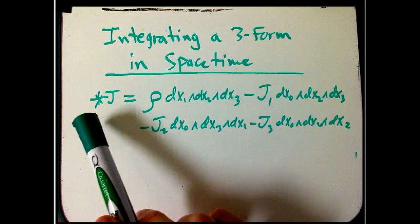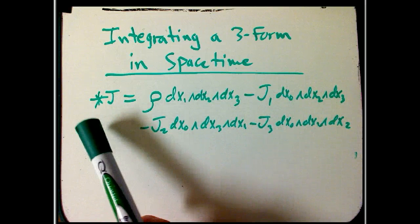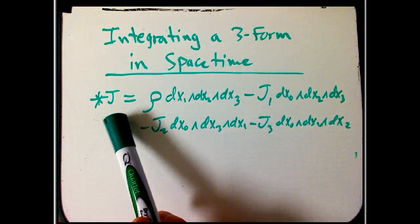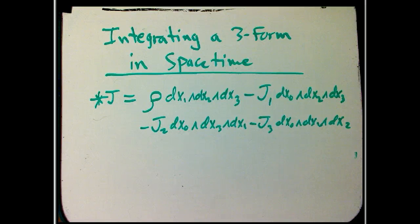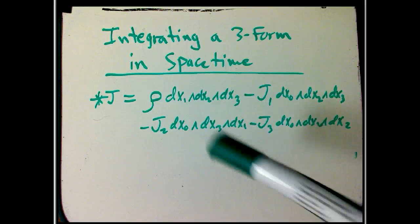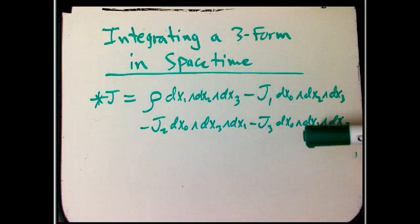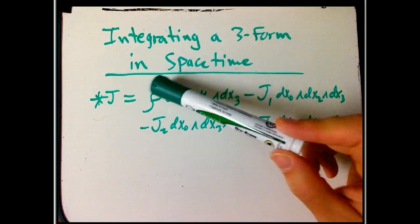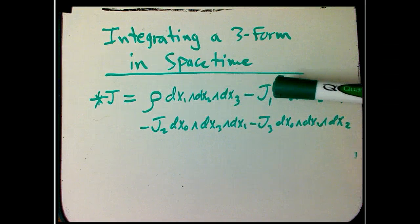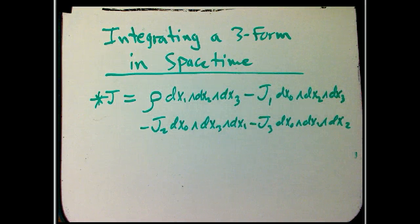So we'll do this special case where star j, if j is really the charge current four-dimensional one-form, if you do the signs carefully out, then the 1, 2, 3 component is rho, the charge density, and then the other ones are minus j1, j2, and j3.